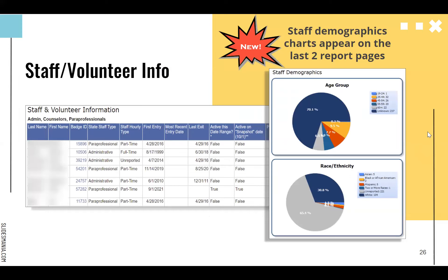We also added something to the staff and volunteer information report — we highlight this every year to make sure you're reporting accurately the number of staff and volunteers. We added staff demographic charts on the last page, because folks were asking about that. The MDE and Literacy Minnesota are increasingly interested in programs tracking staff demographics, which is optional in SID as far as inputting that information, but there's more and more interest in tracking it, so we added nice demographic charts at the end.